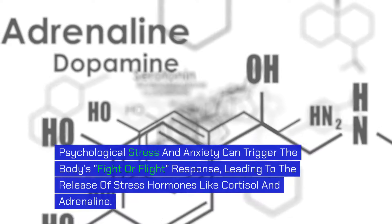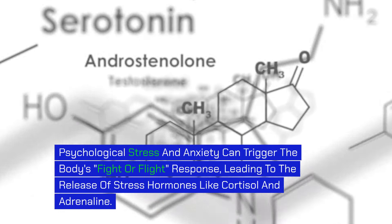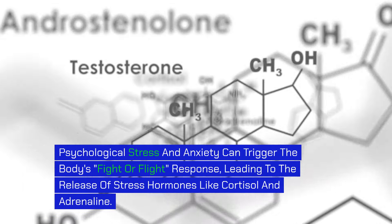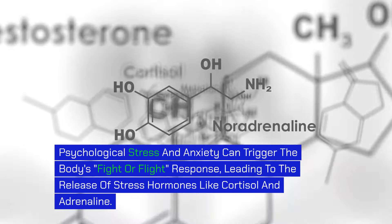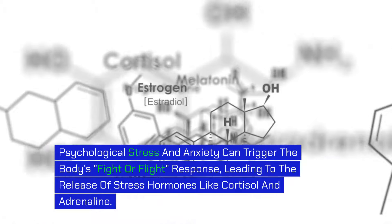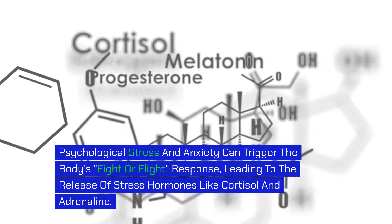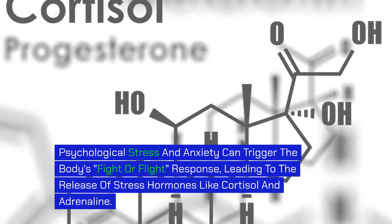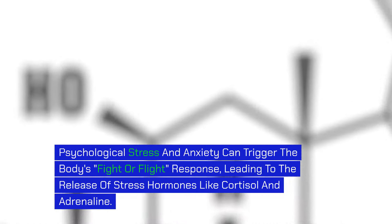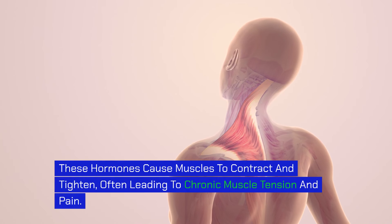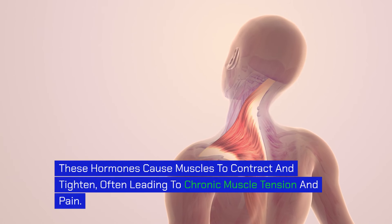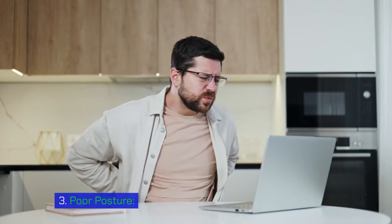2. Stress and Anxiety. Psychological stress and anxiety can trigger the body's fight-or-flight response, leading to the release of stress hormones like cortisol and adrenaline. These hormones cause muscles to contract and tighten, often leading to chronic muscle tension and pain.